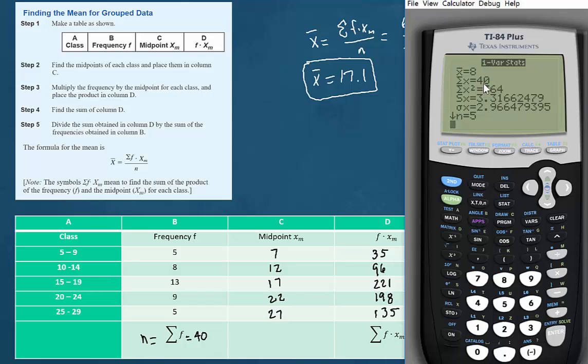Now we want to do the same thing for list 3. So we'll go to stat, over to calc, one variable statistics, and now we want to find the sum for the values in list 3.